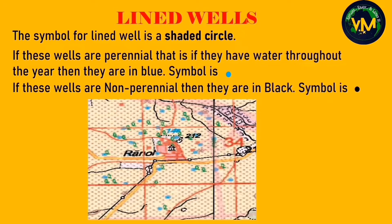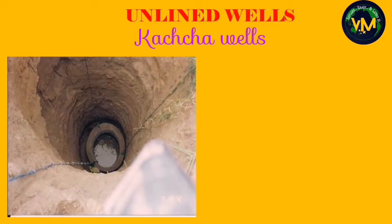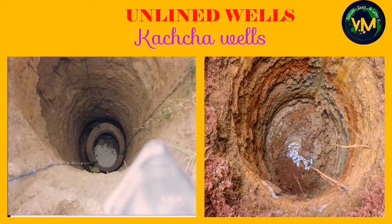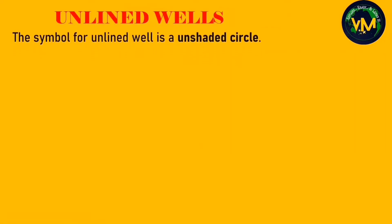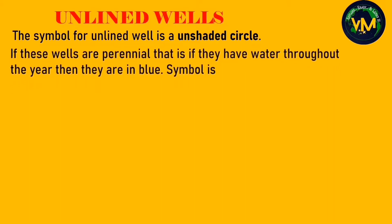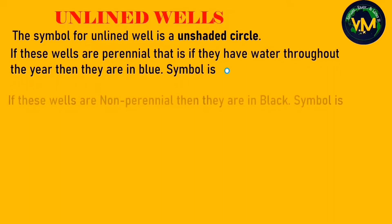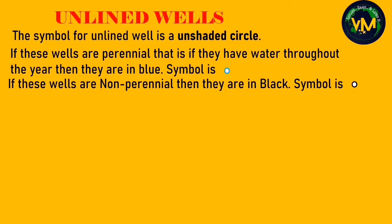In this picture of a topographical map, you can see the blue shaded dots — these are perennial lined wells. Unlined wells are called kacha wells. They do not have walls with bricks or stones. They are usually seasonal and not much deep. The symbol for an unlined well is an unshaded circle — blue if perennial and black if non-perennial.